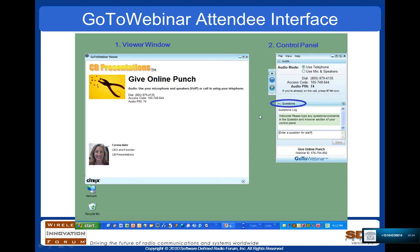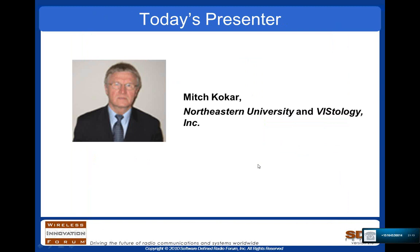If you have a question during this session, there are two ways of getting attention. The first is to type your question into the questions window shown on your screen, and those questions will come to me and I can pass them on to the presenter. The other way is a hand button on your control panel — clicking it will raise your hand and notify us that you'd like your microphone turned on to ask a question. The speaker is asked to manage questions as we go.